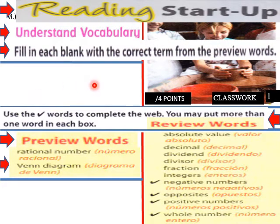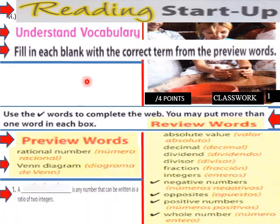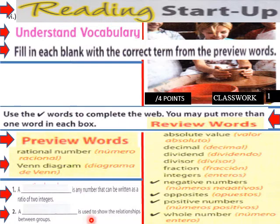Fill in each blank with the correct term from the preview words using these rational number and Venn diagram. A blank is any number that can be written as a ratio of two numbers, two integers rather, two integers. And a blank is used to show the relationships between two groups. So students, fill that in.